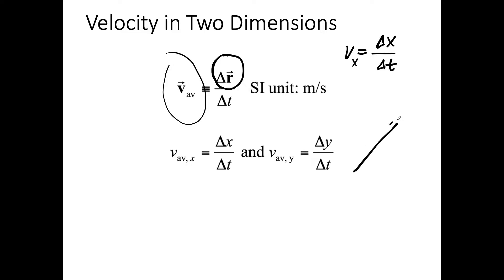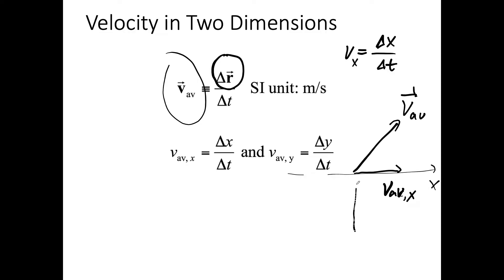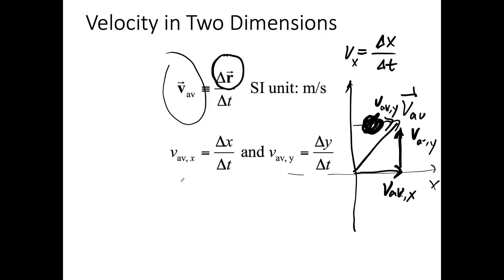As a vector, our average velocity v can have an x component — v-average-x pointing in the positive x direction — and a y component, v-average-y pointing in the positive y direction. The x component of velocity is the displacement in the x direction divided by t, and the average velocity in the y direction is the displacement in the y direction divided by t.